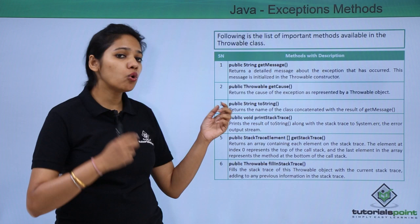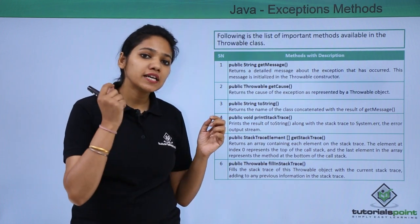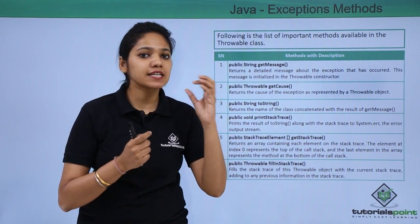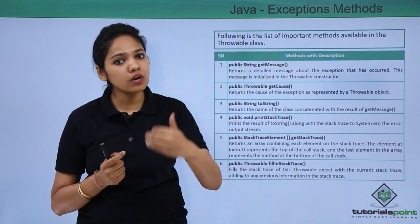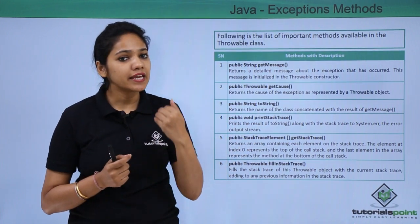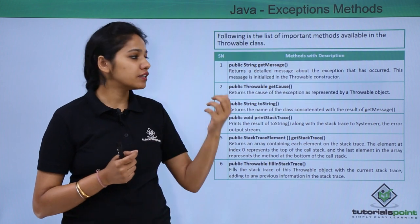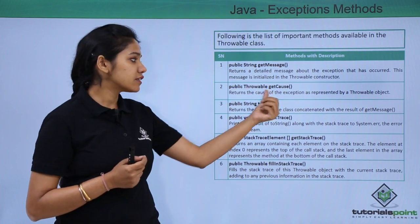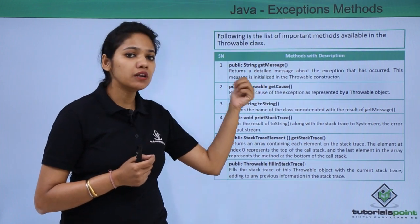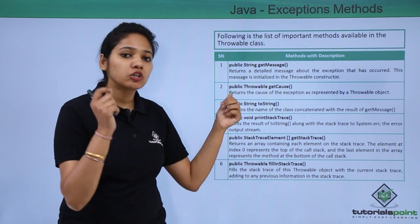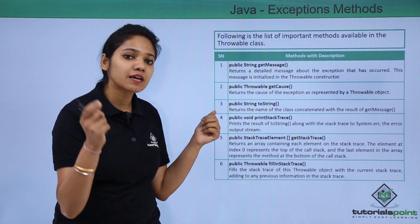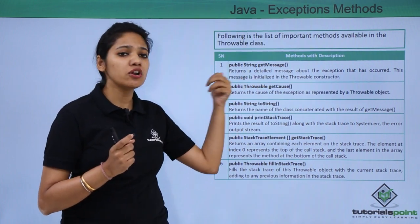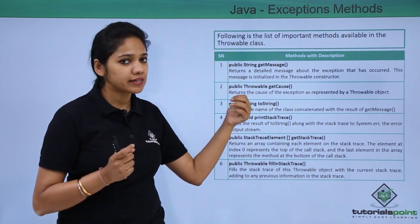If you want to know what is the cause for an exception to occur, it should return a Throwable object. The cause of an exception is always available in your Throwable class.